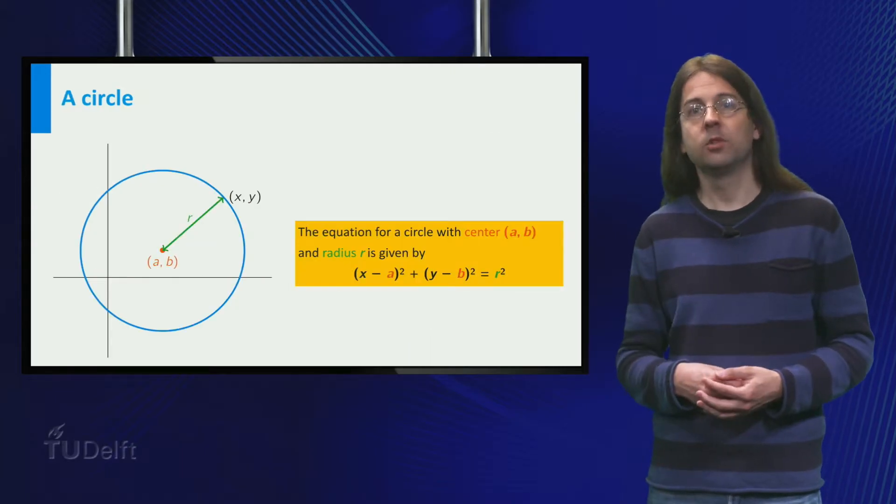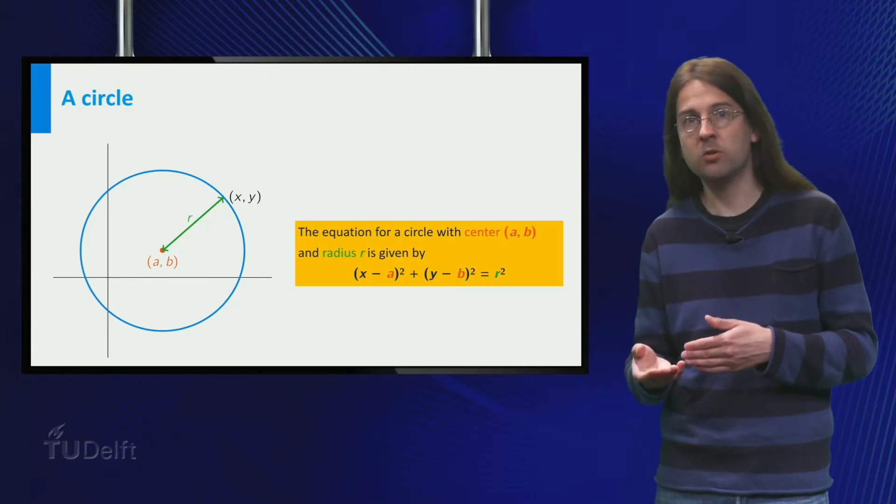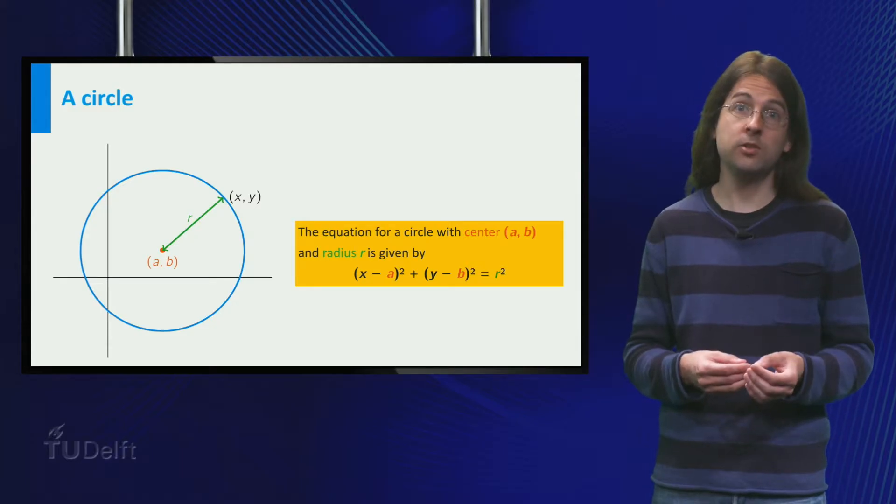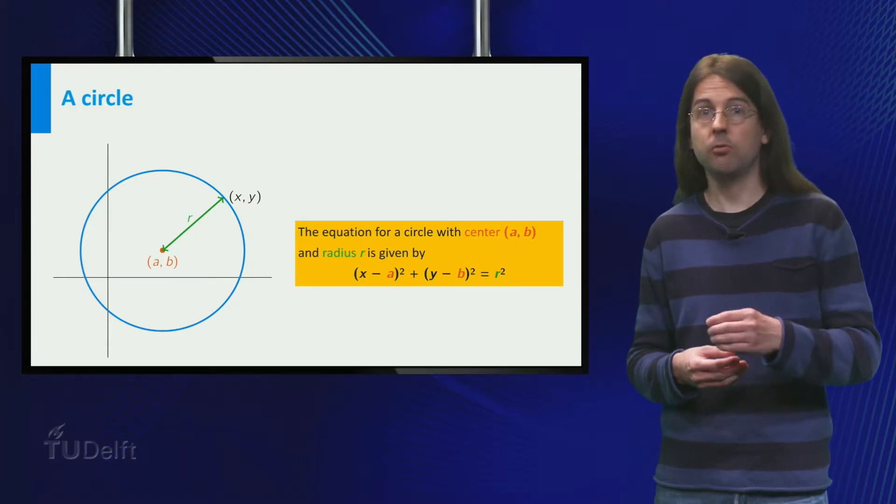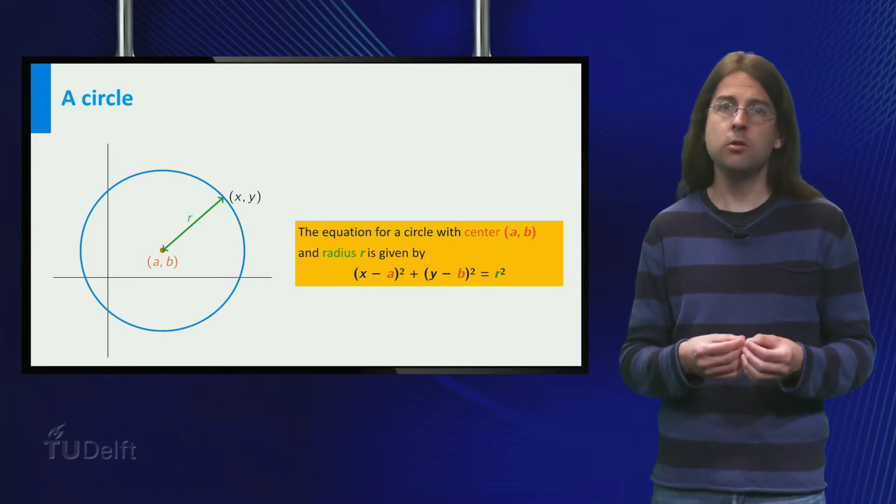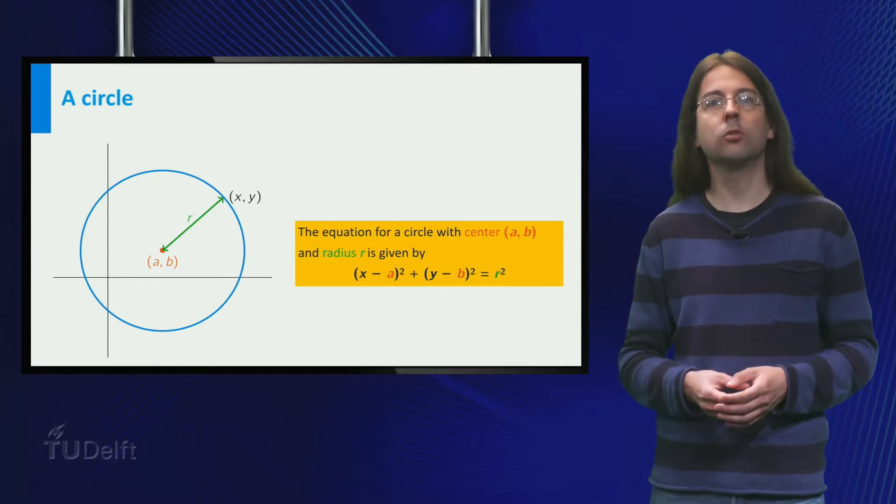In the standard form of the formula for a circle, x minus a squared plus y minus b squared equals r squared, you can easily read off both the location of the center, a, b, and the radius r. So expanding this formula is usually a bad idea. It makes it less clear what circle you are using.